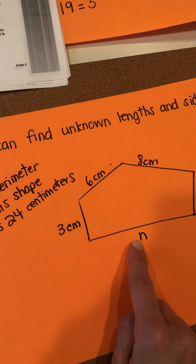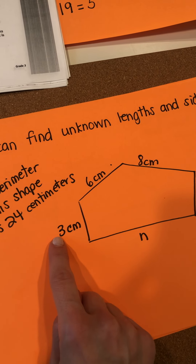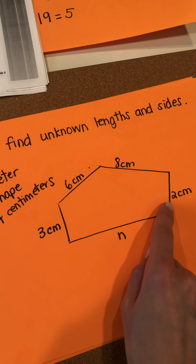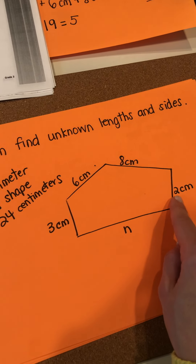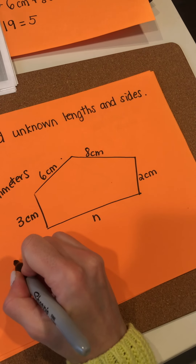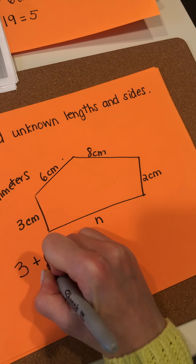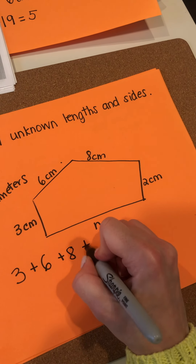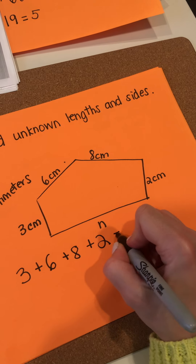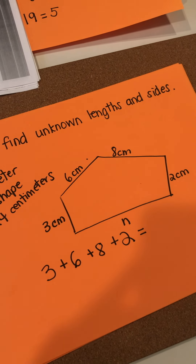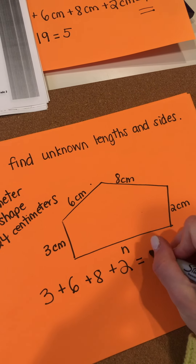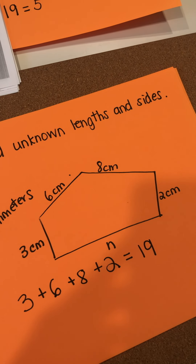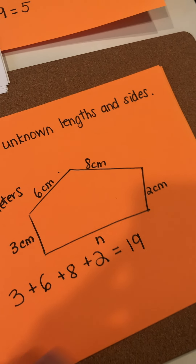What are the known side lengths? Well, we know this is 3, this is 6, this is 8, and this is 2. What is their sum? Let's find the sum of the known sides. It's going to be 3 plus 6 plus 8 plus 2. That equals 19. So the sum of the known sides is 19 centimeters.